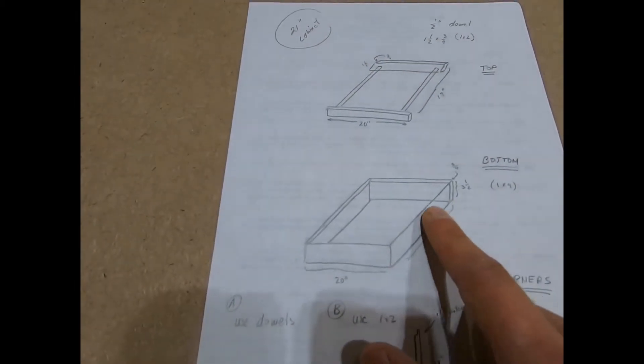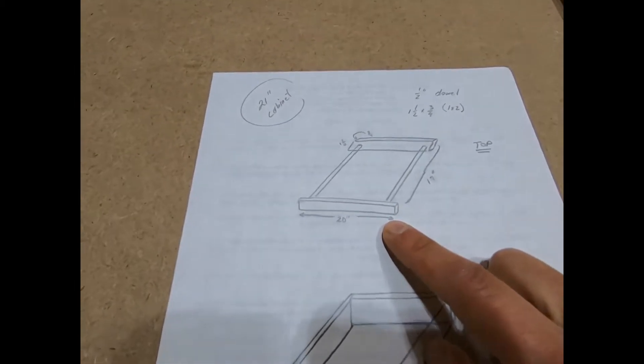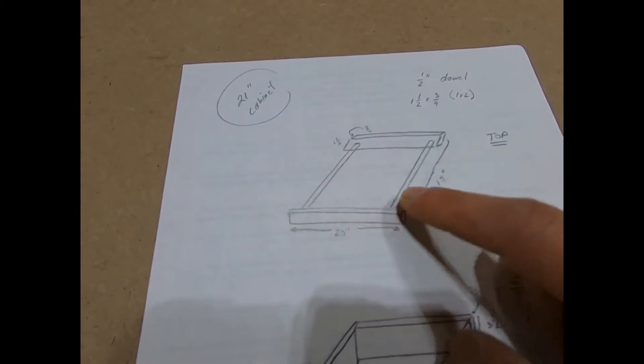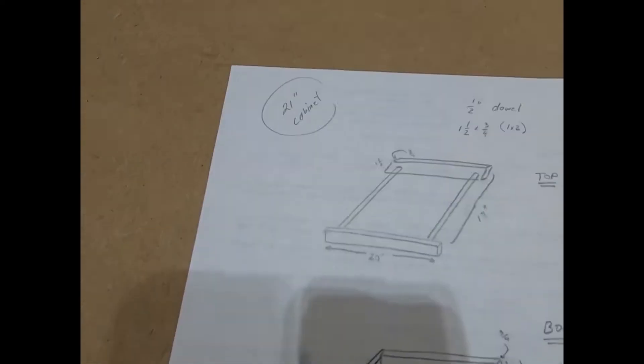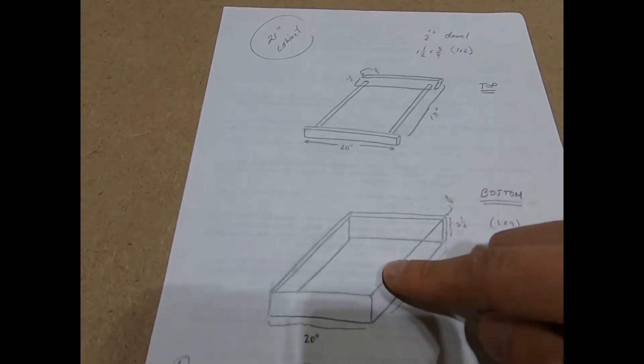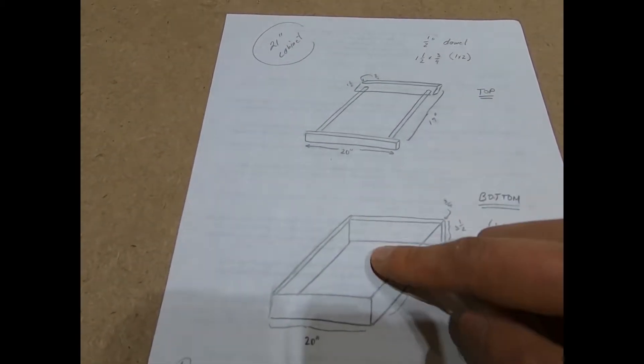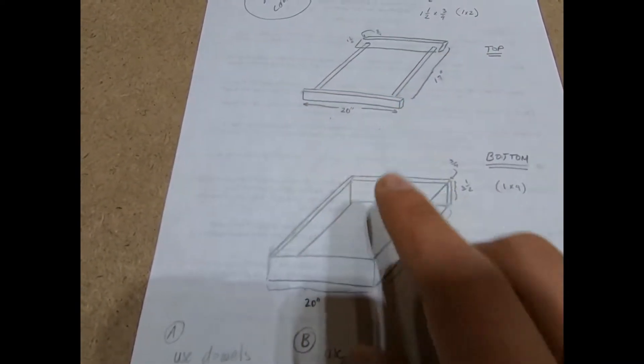For this I am just using whatever scrap wood I find in my shop. The top, honestly I am only going to use a 1x2 trim. And I am going to connect it with wood dowels, half inch wood dowels. And I am going to connect the two pieces also using wood dowels. So I am going to go down about an inch, that way it doesn't move too much.